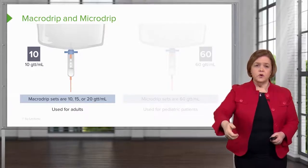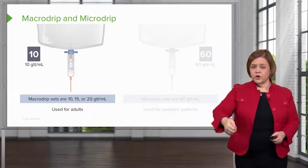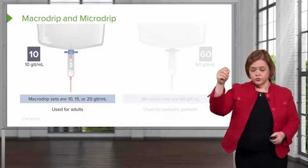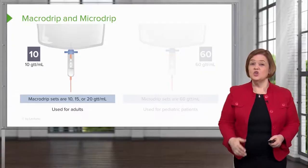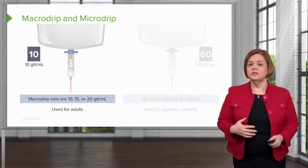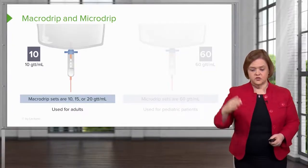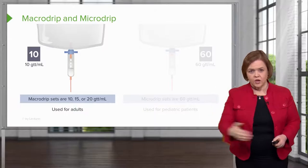If the roller clamp is backed all the way off, it's going to flow really fast. You probably won't be able to count the drops because it's just going to be a solid stream.